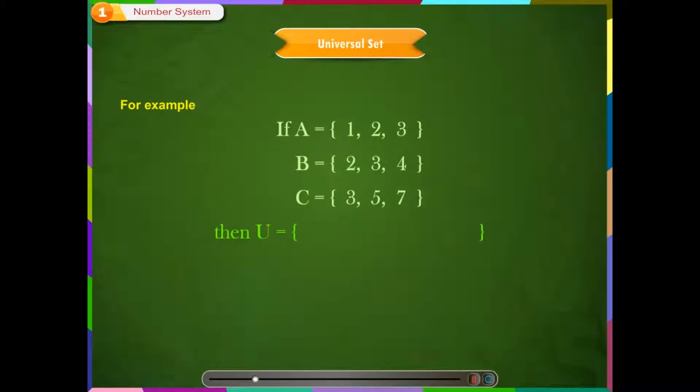Then universal set U is equal to 1, 2, 3, 4, 5, 7, 9. Here, A is a subset of U, B is a subset of U, and C is a subset of U.